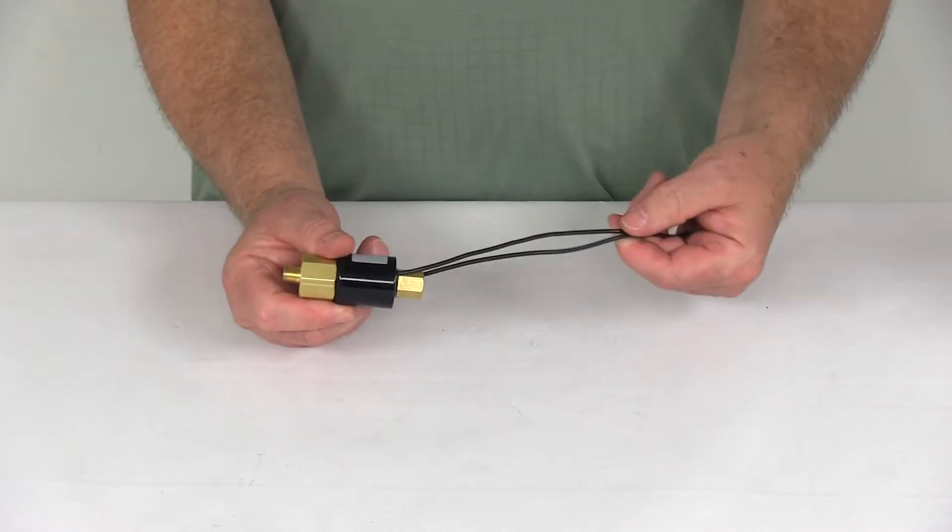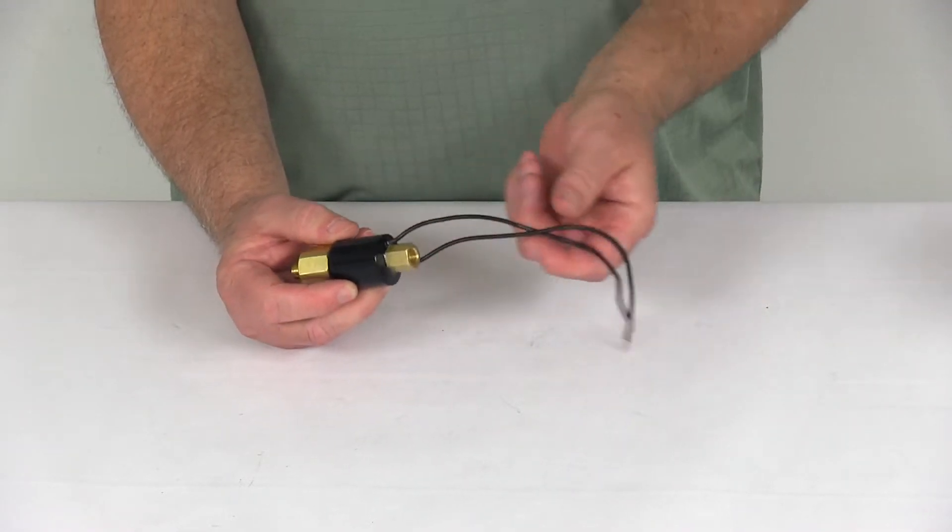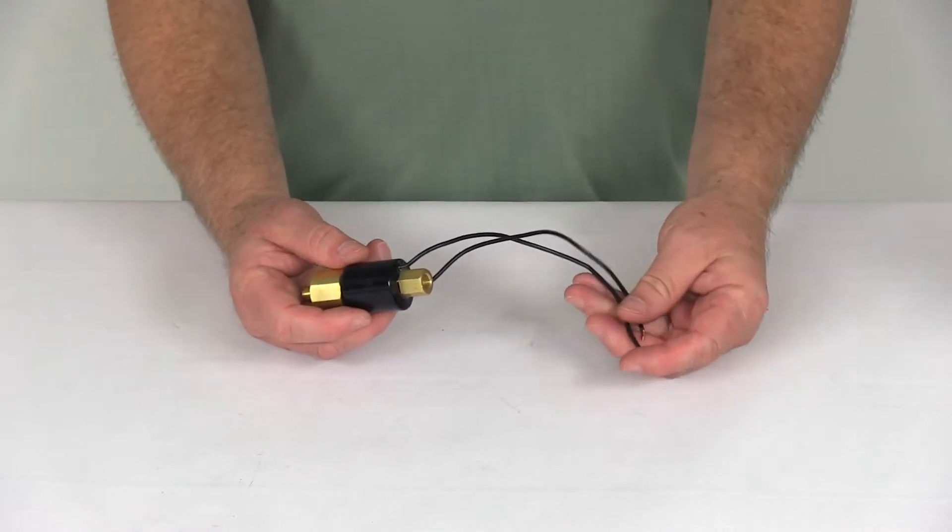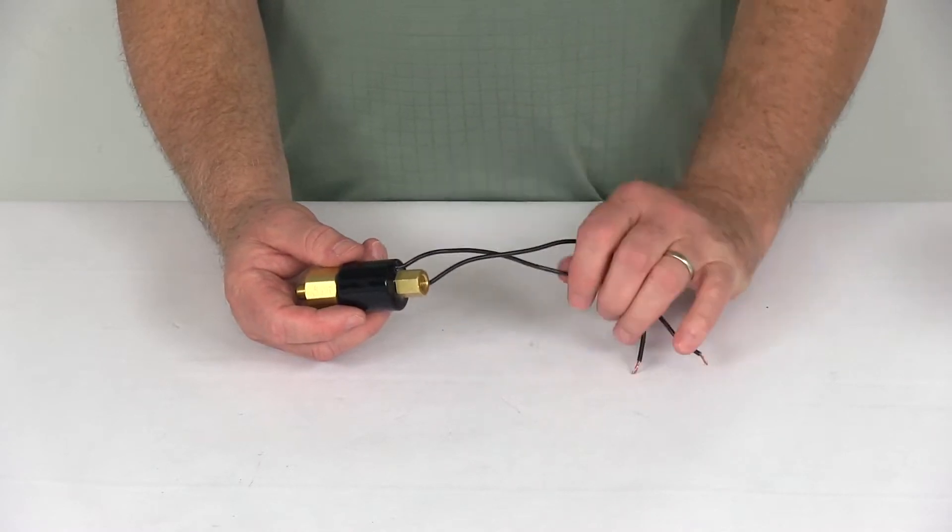The solenoid has two black wires. One will be grounded. The other will connect to the reverse light circuit. They're both black wires so either wire will work for either function.